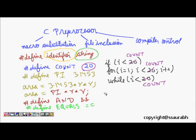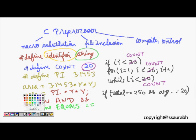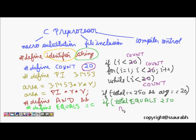If I have something like if total == 250 && average == 20, I can now replace this code with if total EQUALS 250 AND average EQUALS 20. Then we are done.